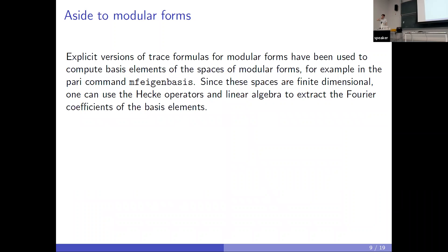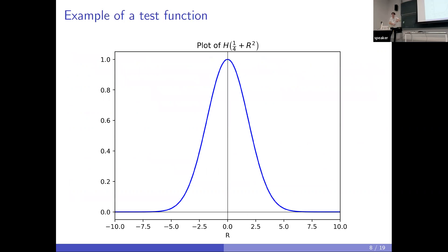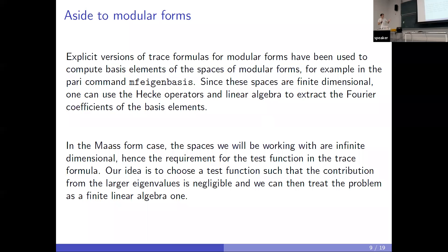A quick aside for modular forms. The idea of using the trace formula for modular forms has been well known for a while, and people use this in the pre-command MF eigenbasis. This works very well where you can just use linear algebra and Hecke operators to find a basis. The case with Maass forms, however, is that all the things are infinite dimensional. We no longer have nice finite dimensional linear algebra. The goal is to choose a test function such that it decays far enough, such that all the eigenvalues in the tail are negligible.